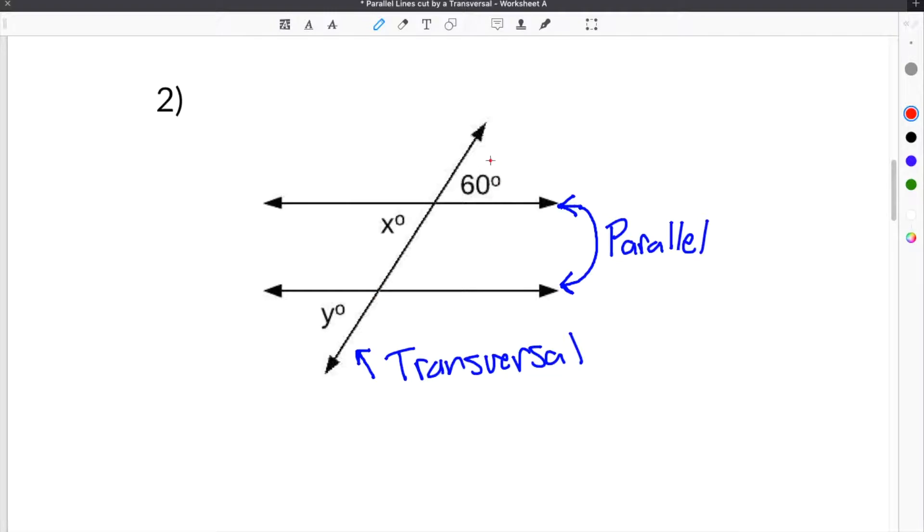Now, when you're solving for angles that are missing in parallel lines cut by a transversal, there are a few key things that you need to remember. The easiest two things to remember are vertical angles and corresponding angles. Vertical angles are any angles that are diagonal across the parallel line and the transversal. In the case of this problem, 60 and x are vertical angles.